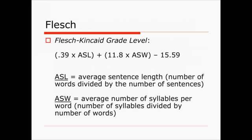A very common readability index is Flesch and the Flesch-Kincaid grade level formula. And this formula is calculated using this particular formula here: .39 times the average sentence length, plus 11.8 times the average number of syllables per word, minus 15.59.